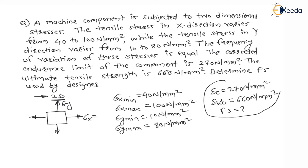Since SE and SUT are given, we will use the Goodman line for the solution. If SYT were given instead, we would use the Soderberg line. Before applying the Goodman line, we have to find the amplitude stress and mean stress.